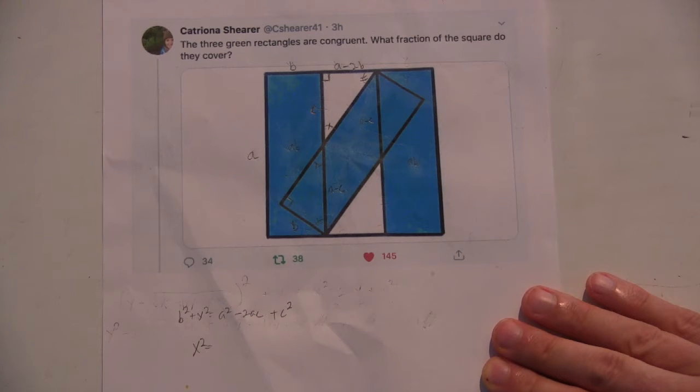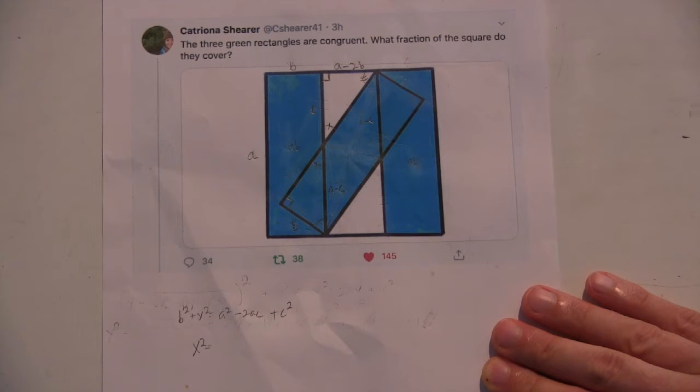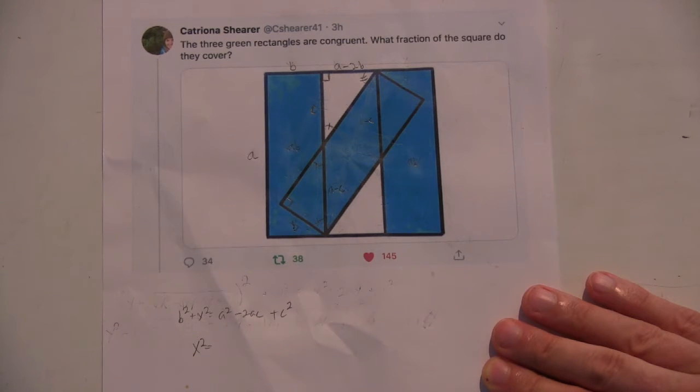They're congruent and the fraction of the square did they cover. Alright. So, at first I tried, I was going to label the side lengths A and B. Okay. And that these had an area of AB and the whole area was A squared. Yeah, that's right.